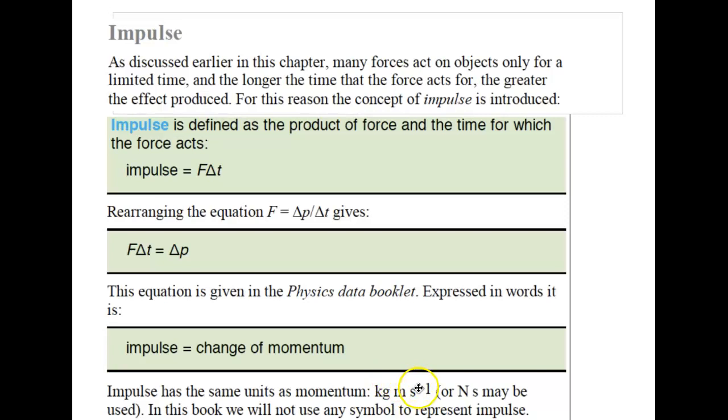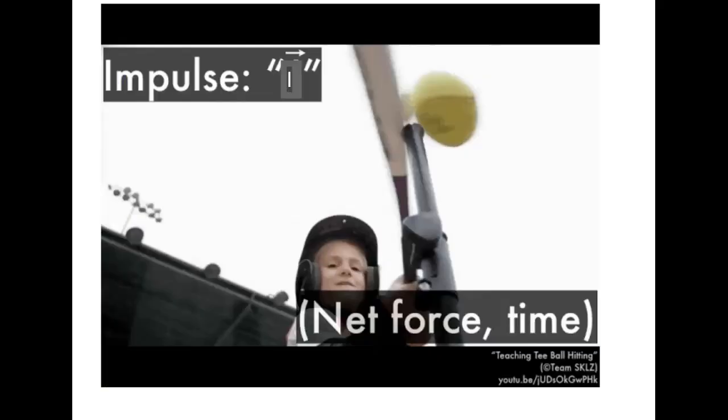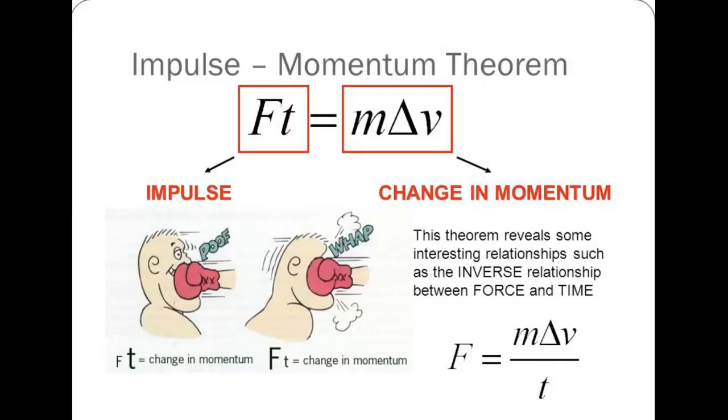so the units of momentum can be kilograms meters per second or newton seconds. This is preferable because it's in SI units, but both are valid. Now let's talk